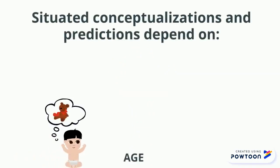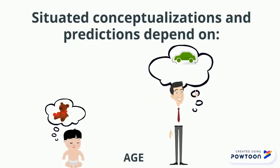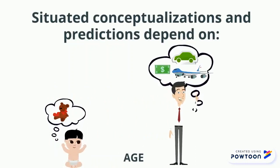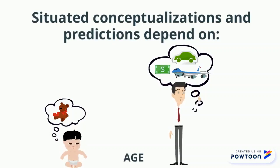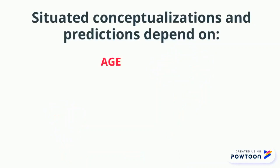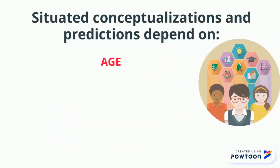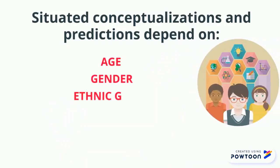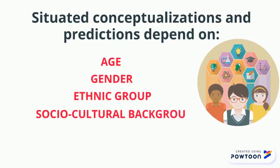Situated conceptualizations and predictions are directly related to background experience and the type of input we have received throughout our lifetimes. Depending on the amount of events experienced, the more situated conceptualizations we will be able to store in our memories, and the more predictions we will be able to elaborate. Other factors like gender, ethnic group, and sociocultural background may also influence the availability of picturing ourselves in a specific situated conceptualization.